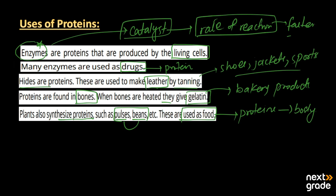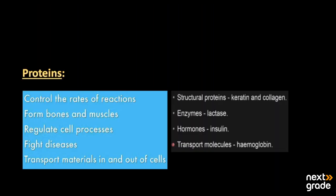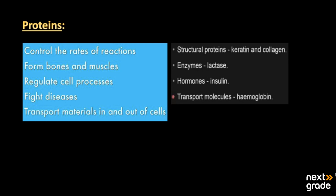Looking at the enzyme function of proteins, enzymes have extraordinary efficiencies and can also control bleeding and help treat cancer. Proteins control the reactions in living organisms, they form bones and muscles, and they regulate cell processes and all cell functions because they are enzymatic in nature. They help us fight diseases and also transport material in and out of cells.